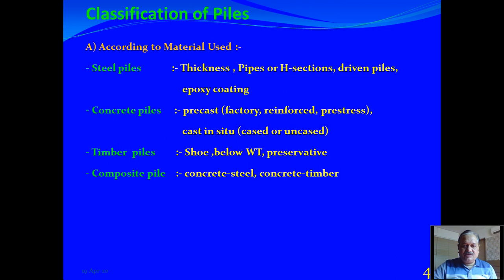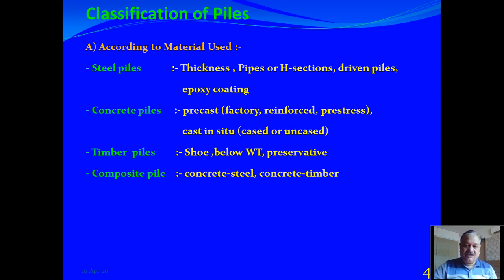Timber piles are used below the groundwater table because they give better performance in that condition. Usually the timber pile has a steel shoe at the bottom, and a preservative in the form of creosote oil is applied before driving. Composite piles are also used, having concrete on the top portion and steel or timber below the groundwater table, since steel and timber perform better when placed below the groundwater table.